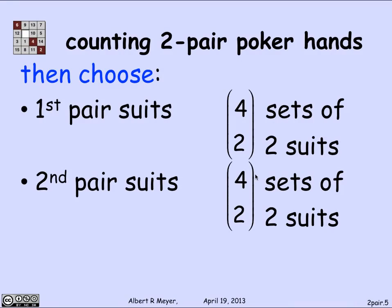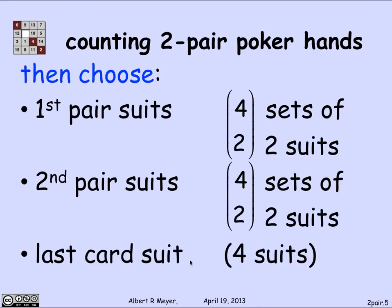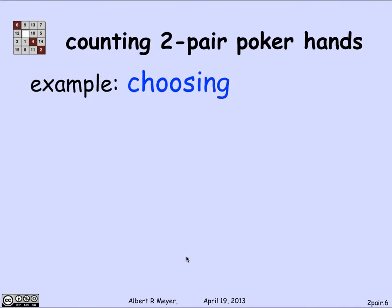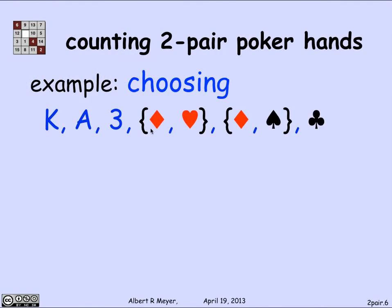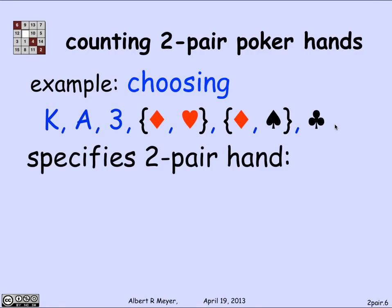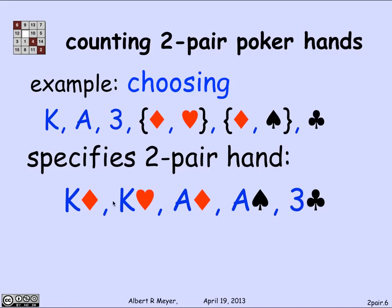Likewise, there are four-choose-two ways to choose the two suits for the second pair, and four possible suits for the last card. For example, we could specify a pair of kings as the first pair and a pair of aces as the second, with a three as the loose card — choosing diamonds and hearts for the kings, diamonds and spades for the aces, and clubs for the three. This specifies exactly the two-pair hand illustrated: king of diamonds, king of hearts, ace of diamonds, ace of spades, three of clubs.